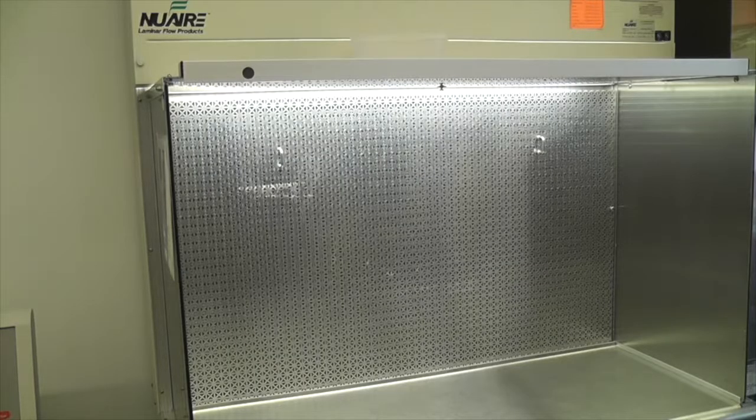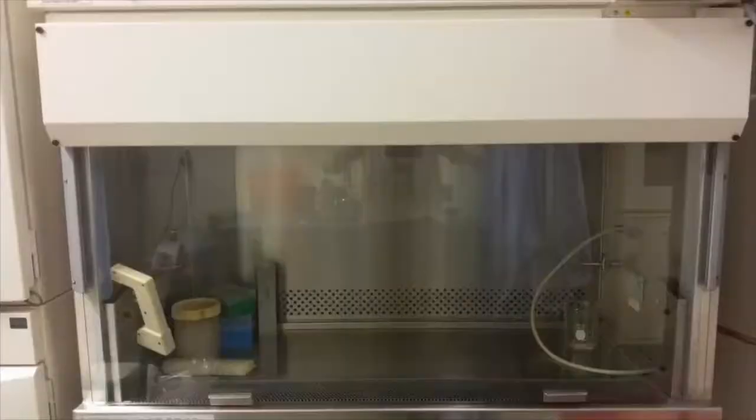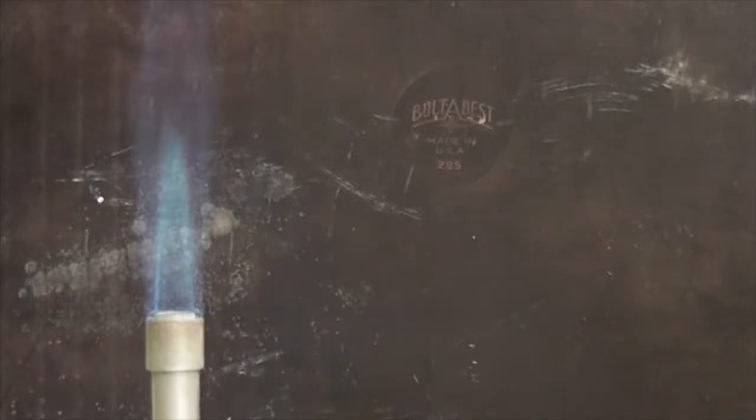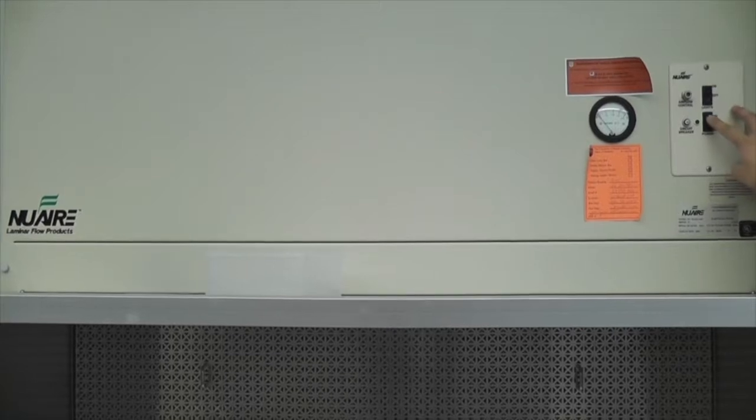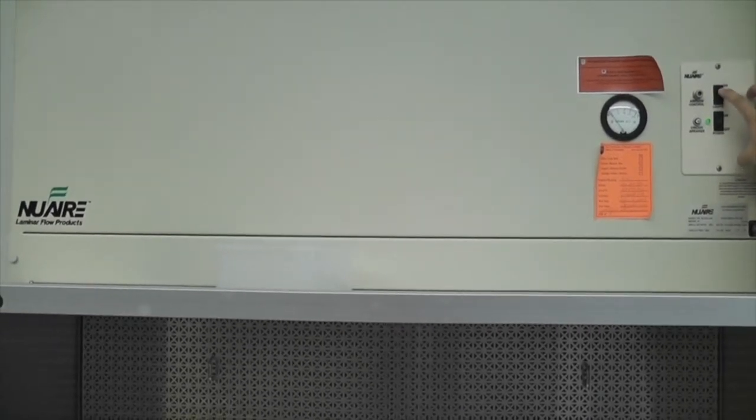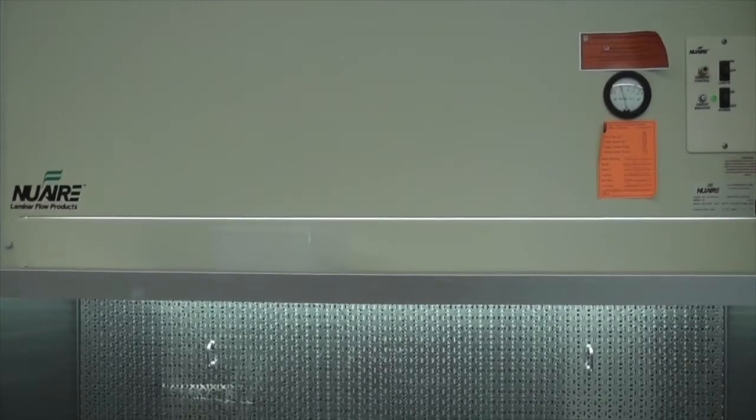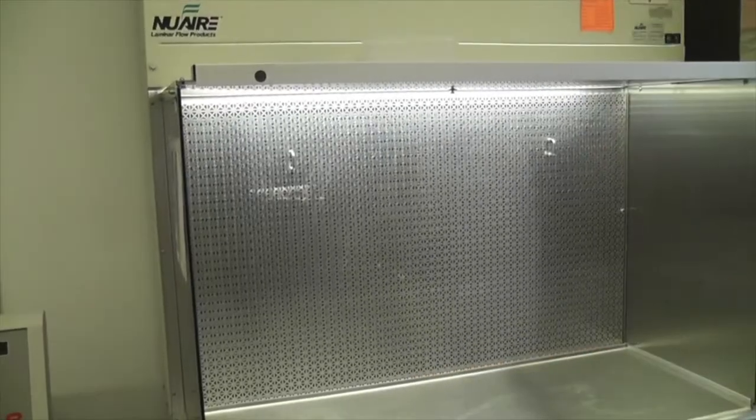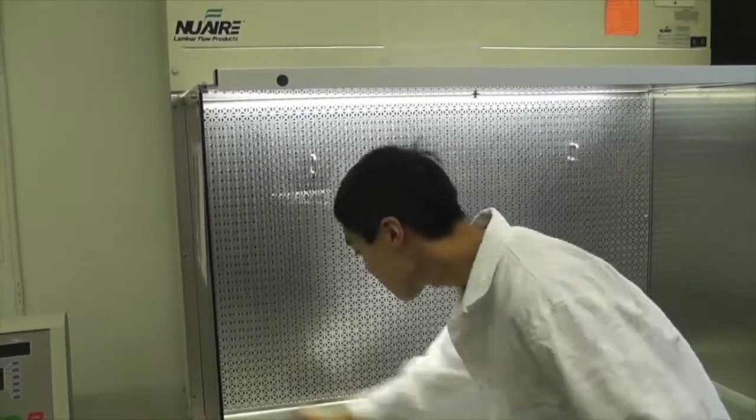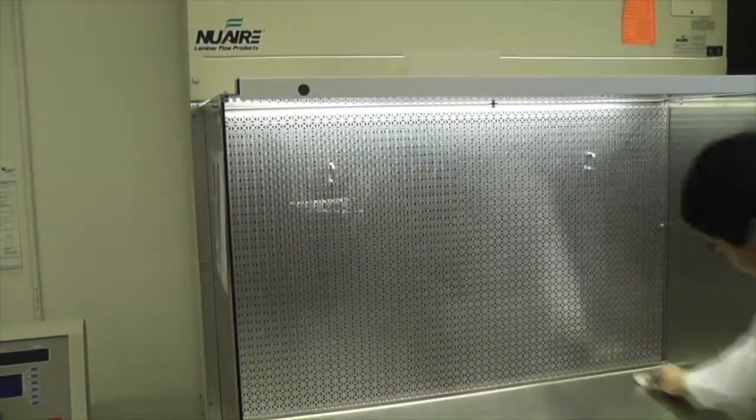Ideally, plates should be poured in a laminar flow hood or biological safety cabinet to ensure that they will not be contaminated with microorganisms from the environment. However, if one is not available, plates can also be poured within 6 to 8 inches of a flame using proper aseptic technique. Ensure the flow hood is switched on at least 15 minutes before use to establish laminar flow and remove airborne contaminants already present in the hood. Make sure your work area is thoroughly sterilized with 70% ethanol or another disinfectant.